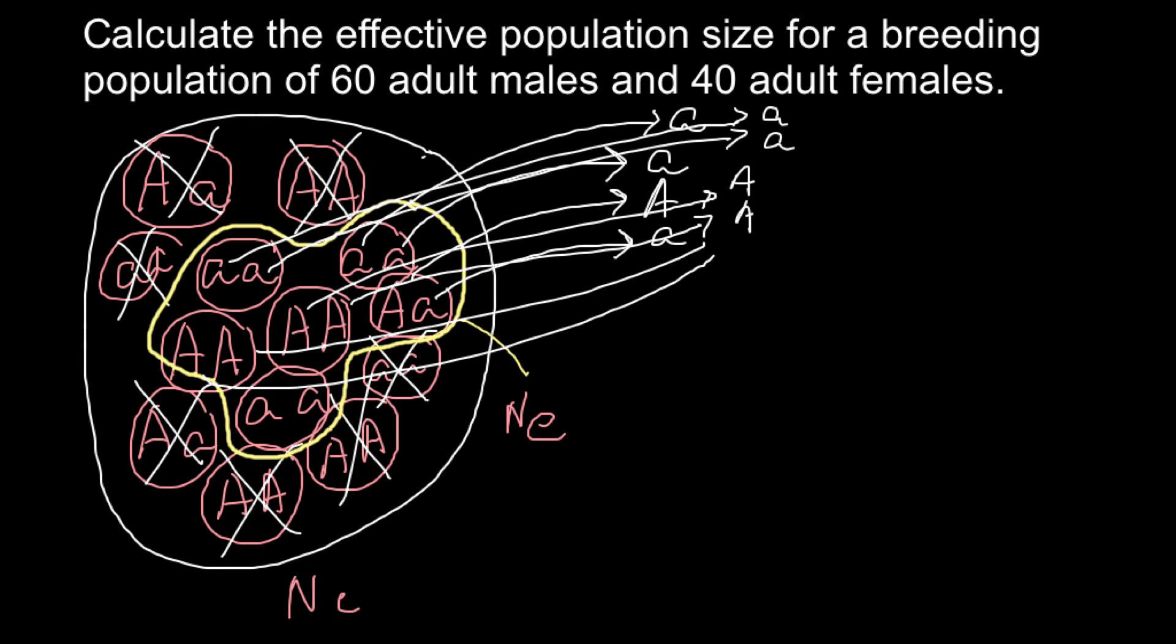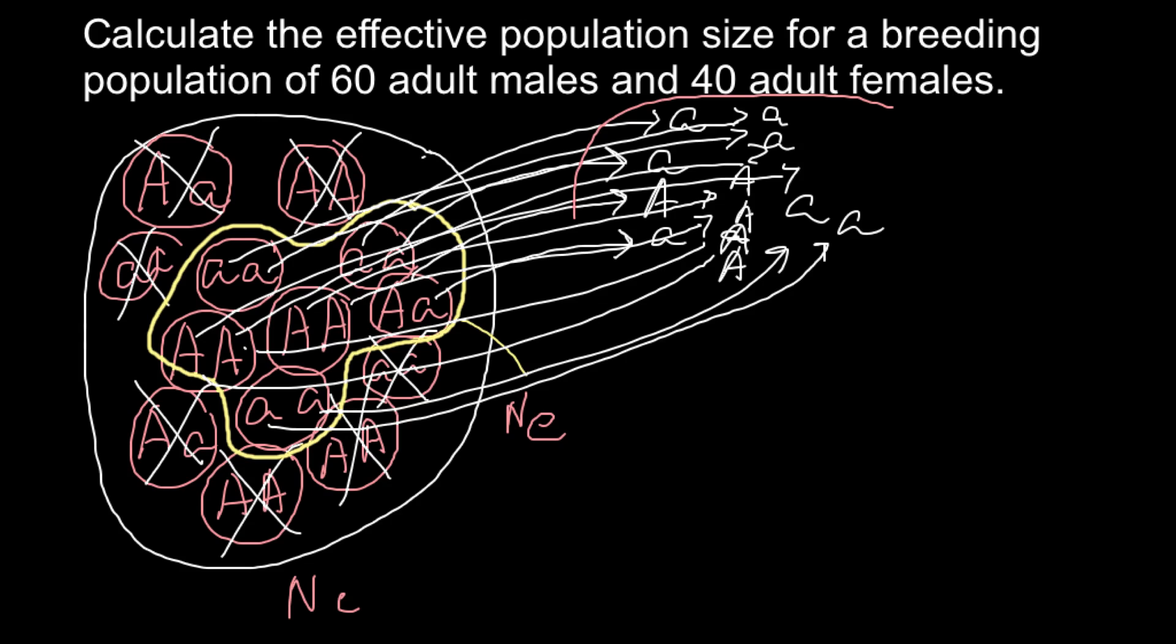As you see, the frequency can be different from the total number of this population. Because we only count those representatives that can produce gametes and would breed. The next generation here, frequency of these alleles can be different from what we have here. Because we only count gametes produced by this effective population.